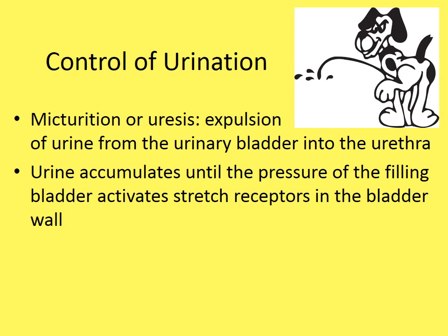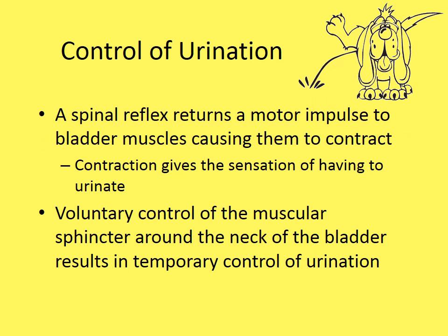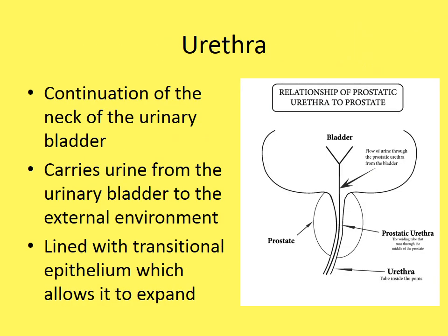Micturition — also called uresis — is the term for expulsion of urine from the bladder into the urethra. Urine accumulates until pressure activates stretch receptors in the bladder wall, triggering a spinal reflex that sends a motor impulse back to the bladder muscle, causing contraction and the sensation of needing to urinate. Voluntary control of the muscular sphincter around the neck of the bladder allows temporary control of urination.